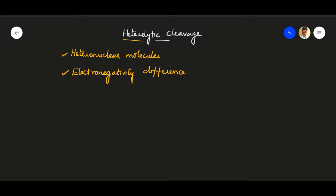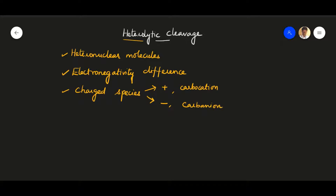So the splitting or breaking of covalent bonds takes place unsymmetrically or unequally, leading to the formation of charged species. In homolytic cleavage there is symmetric cleavage producing free radicals, but in heterolytic cleavage, charged species are produced — one is a positively charged carbocation and the other is a negatively charged carbanion.